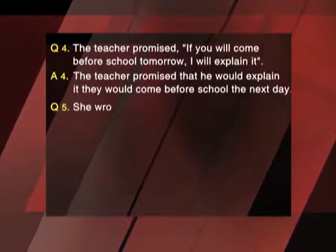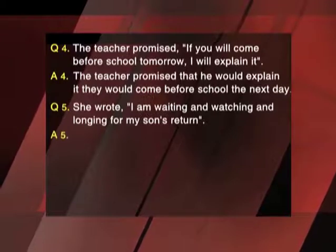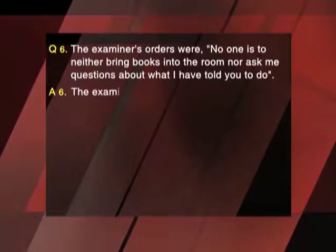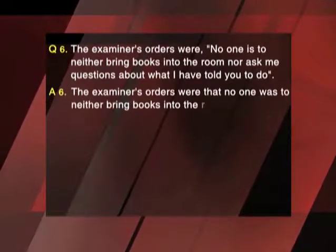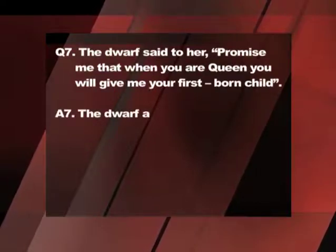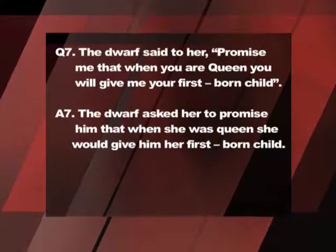Question 5: She wrote, 'I am waiting and watching and longing for my son's return.' Question 6: The examiner's orders were, 'No one is to bring books into the room nor ask me questions about what I have told you to do.' Answer 6: [answer omitted in transcript]. Question 7: The dwarf said to her, 'Promise me that when you are queen, you will give me your firstborn child.' Answer 7: The dwarf asked her to promise him that when she was queen, she would give him her firstborn child.